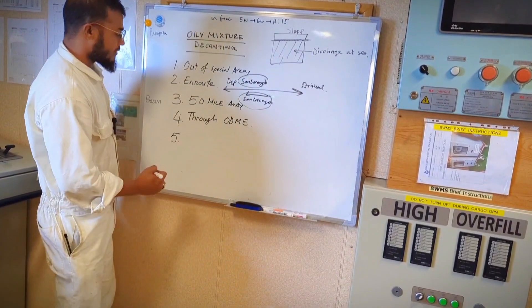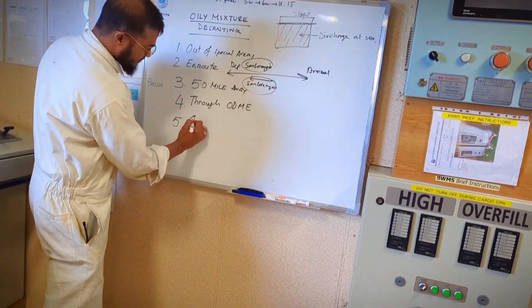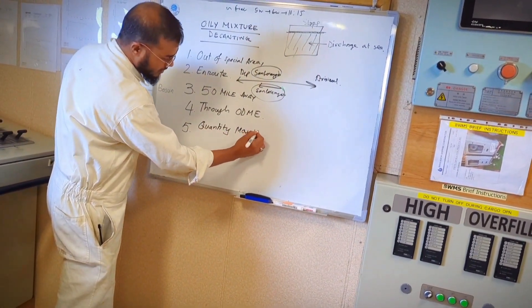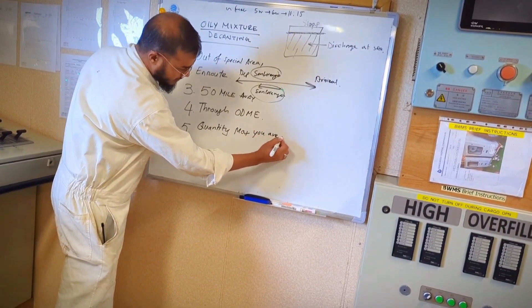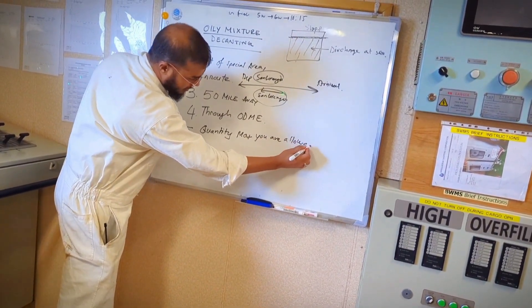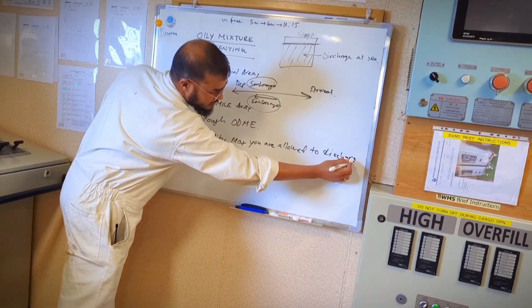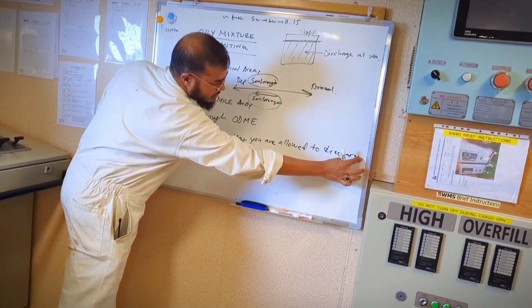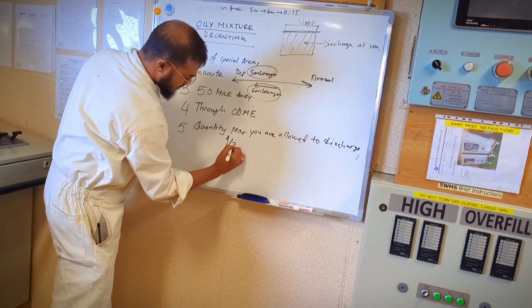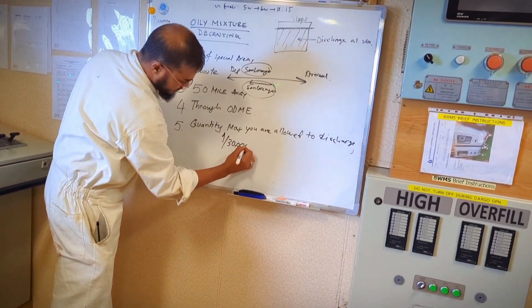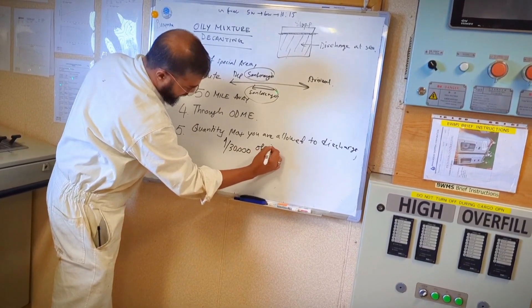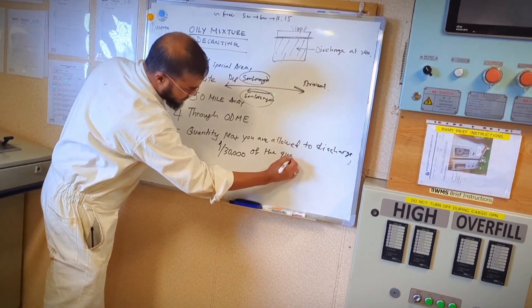Number five, the quantity maximum you are allowed to discharge is one by thirty thousand (1/30,000) of the quantity loaded.